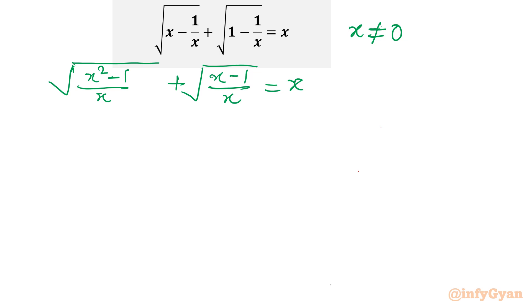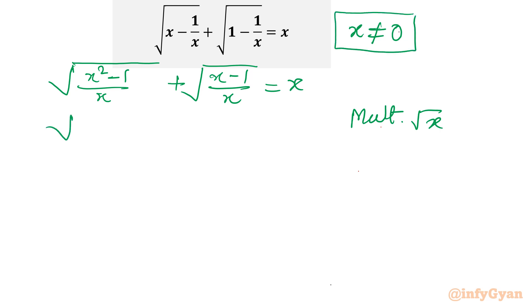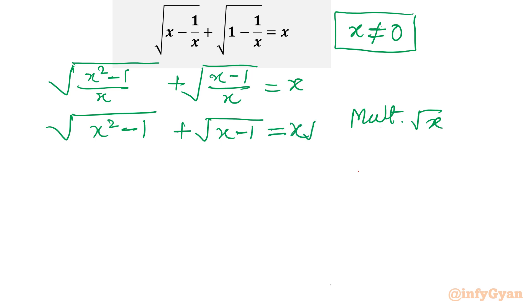Now multiply both sides by root x. As you can see x is not equal to 0, so once I multiply both sides by root x, it will come out: square root of (x² - 1) plus square root of (x - 1) equal to x times root x.